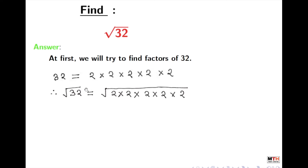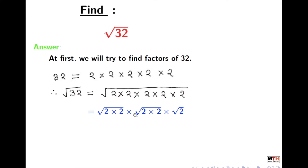Square root of 32 is equal to square root of 2 times 2 times 2 times 2 times 2. Now simplifying it, we get square root of 2 times 2, times square root of 2 times 2, times square root of 2.